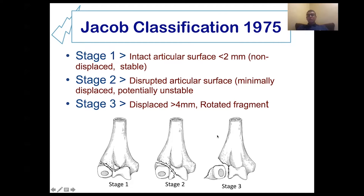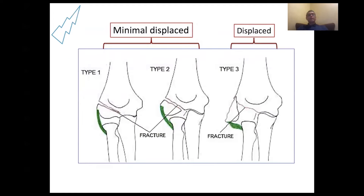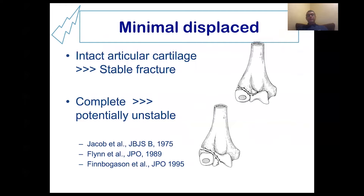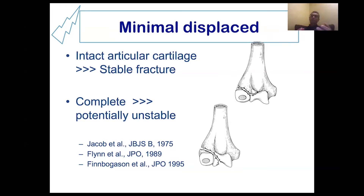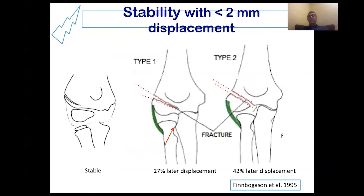Type three is displaced or rotated with a gap of more than two millimeters or four millimeters. The minimum displaced types, one and two, have a gap less than two millimeters, while the displaced type has a gap more than two millimeters or is a rotated fracture. Whether the fracture line passes through the articular surface or not carries a very important prognostic sign, because if the articular cartilage is intact, the fracture carries a very low risk for displacement, but if it extends to the articular surface, there is a higher risk of displacement, and this guides treatment.